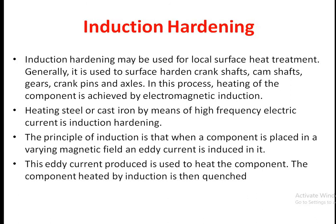The next process is induction hardening, used for local surface heat treatment. It is used to surface-harden crankshafts, camshafts, crank pins, or axles. Heating of the component is achieved by electromagnetic induction — heating steel or cast iron by means of a high-frequency electric current. The principle is that when a component is placed in a varying magnetic field, an eddy current is induced in it.